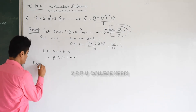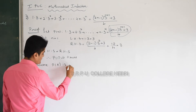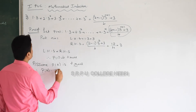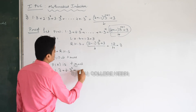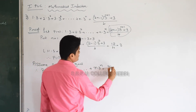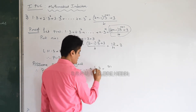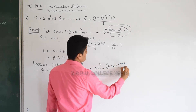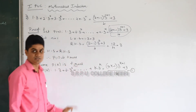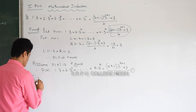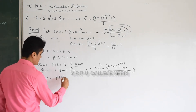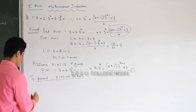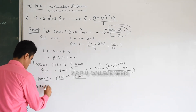Now assume P of k is also true. What is P of k? 1 into 3 plus 2 into 3² plus so on up to k into 3ᵏ equals (2k minus 1) into 3^(k+1) plus 3, all divided by 4. This is our assumption. We are assuming this is true. Using this assumption, we are going to prove that P of k plus 1 is also true. Better to write down P of k plus 1 first.